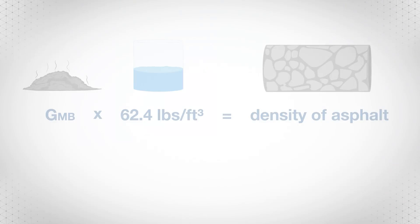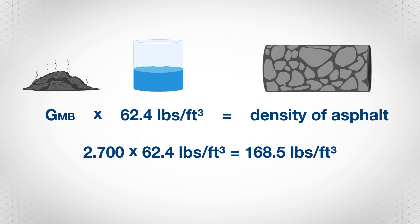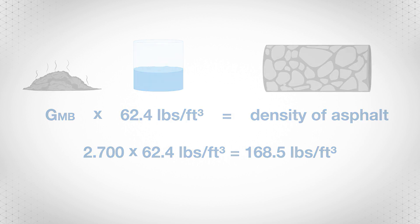To convert GMB to density of asphalt, multiply GMB by 62.4 pounds per cubic foot, which is the density of water. For example, if GMB is 2.700, multiply it by 62.4 pounds per cubic foot. The result is 168.5 pounds per cubic foot.